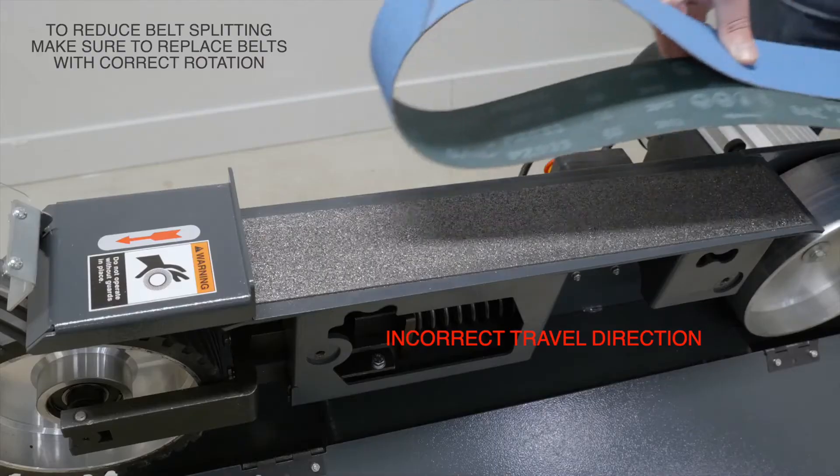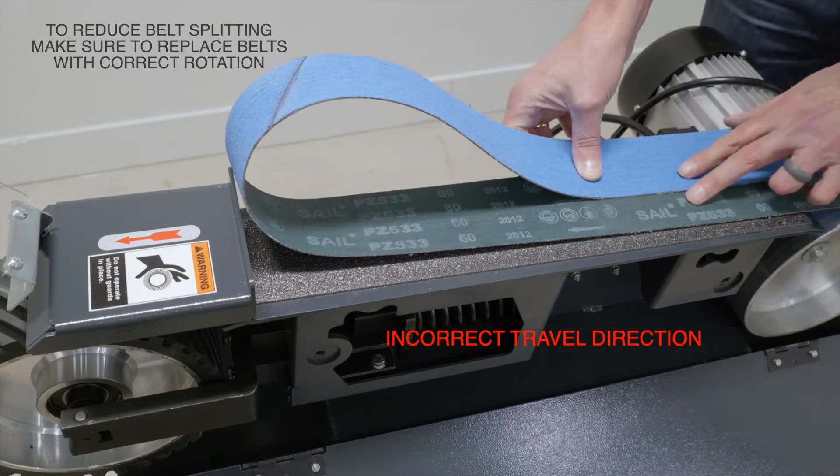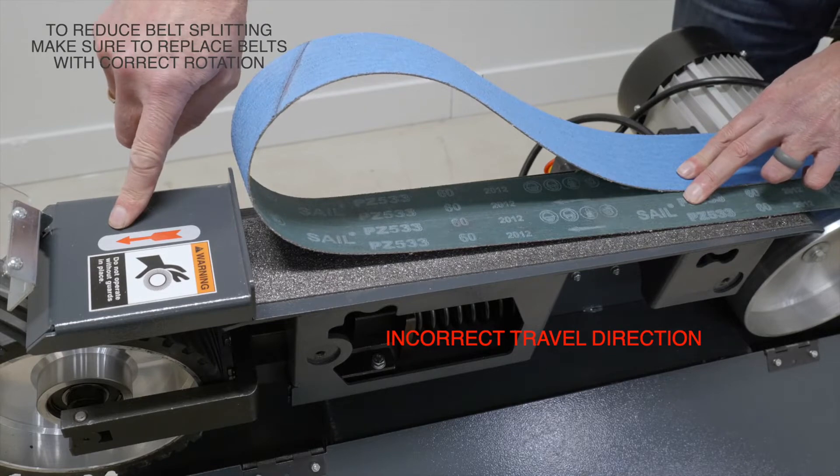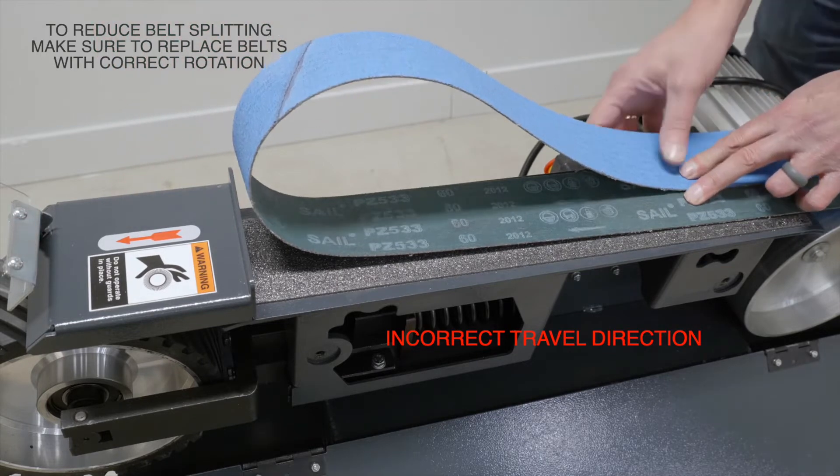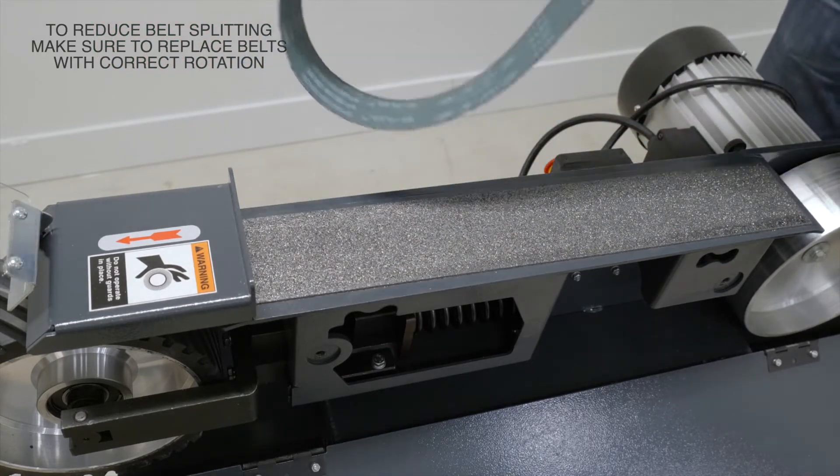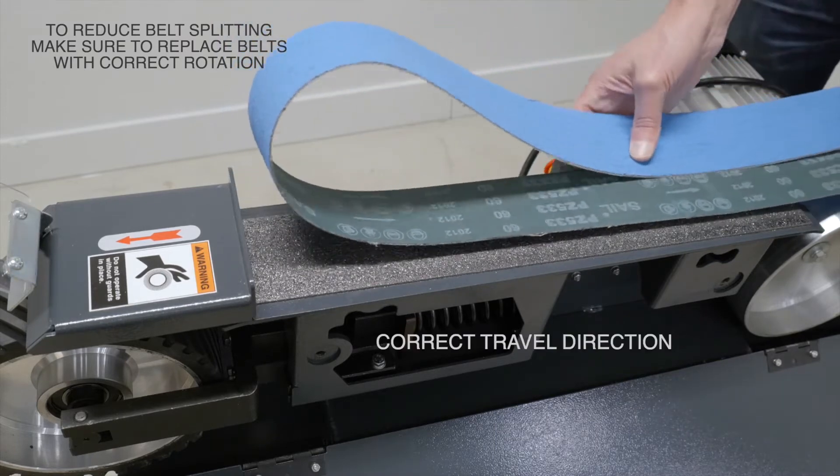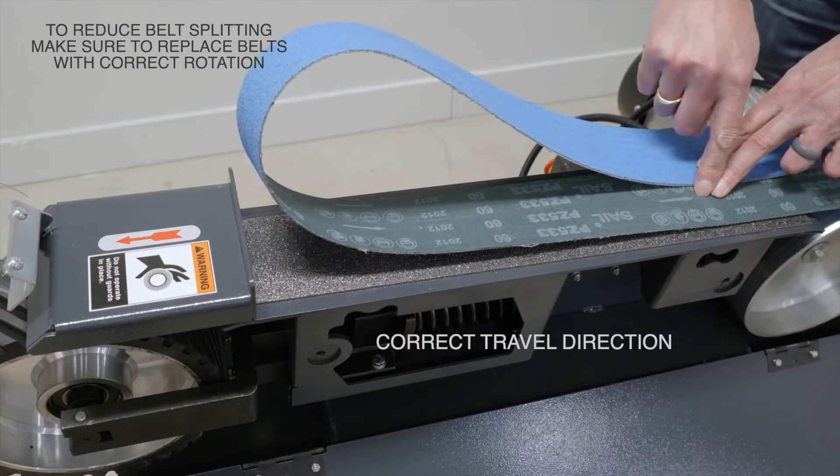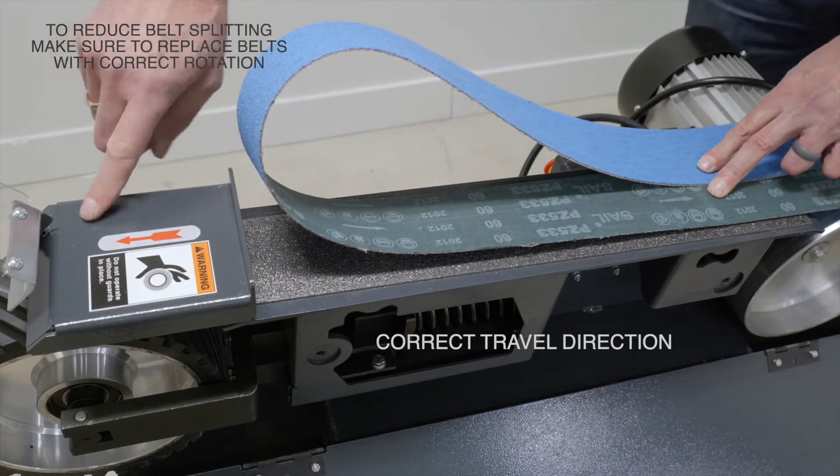To reduce the chance of a belt splitting at the seam, you'll want to make sure to replace the belt with correct rotation. Here you can see the back of the belt with arrows indicating travel direction, and those arrows should be facing opposite. The one on the belt should be facing opposite of the one on the machine.